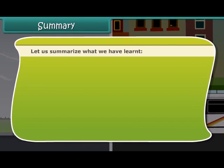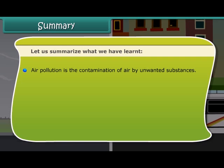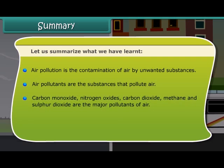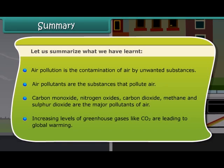Air pollution is the contamination of air by unwanted substances. Air pollutants are the substances that pollute air. Carbon monoxide, nitrogen oxides, carbon dioxide, methane, and sulfur dioxide are the major pollutants of air. Increasing levels of greenhouse gases like CO2 are leading to global warming.